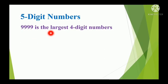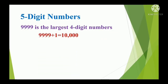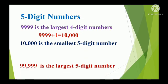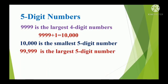9,999 is the largest 4-digit number. If you add 1 to 9,999, you will get 10,000. 5-digit numbers start with 10,000. So, 10,000 is the smallest 5-digit number. 99,999 is the largest 5-digit number.